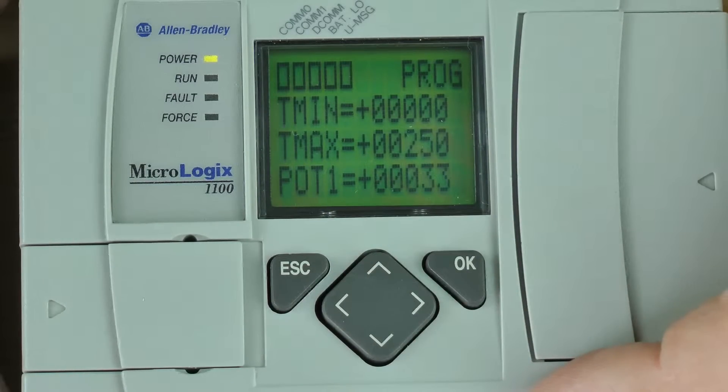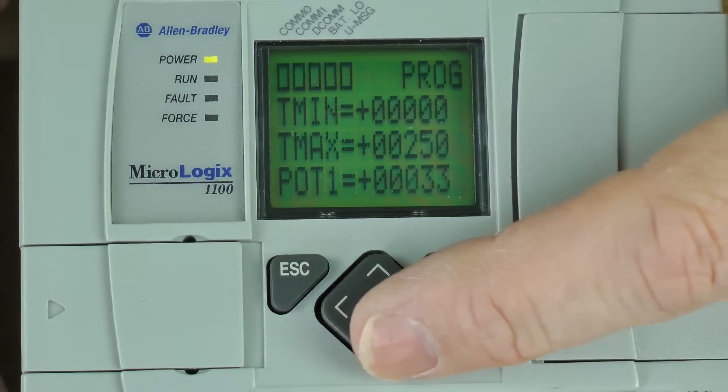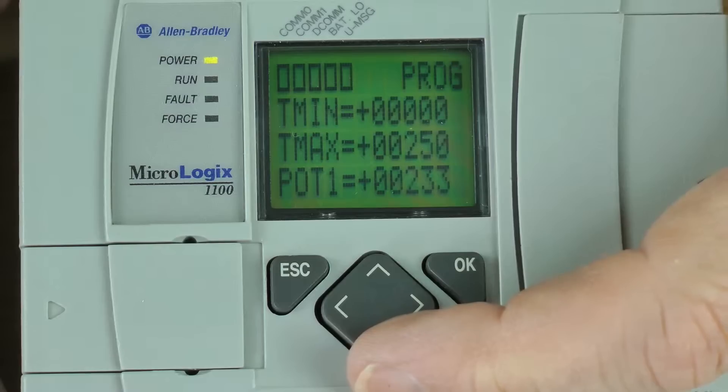Here you can see I changed it to 33. Now I'm going to press the left arrow twice so I can change the hundreds value. And here you can see by hitting the up arrow key twice, I've changed it to 233.